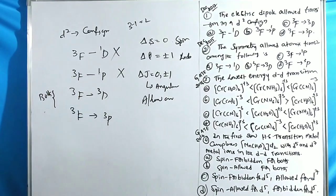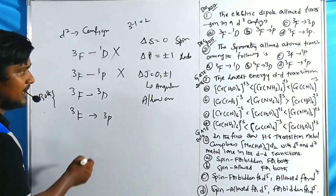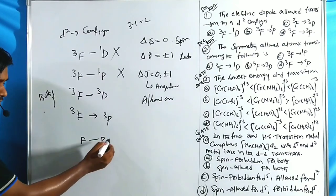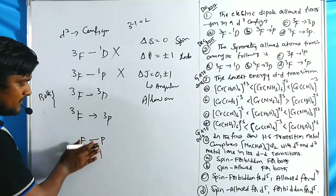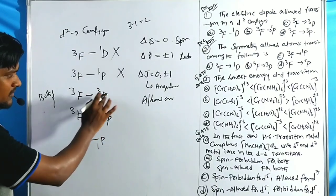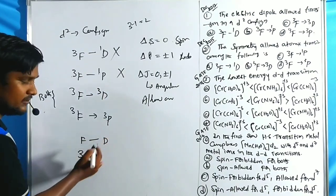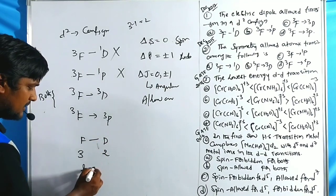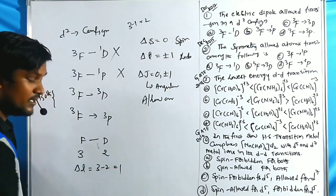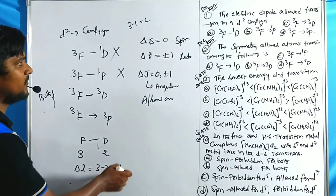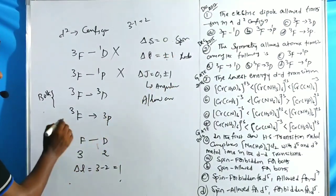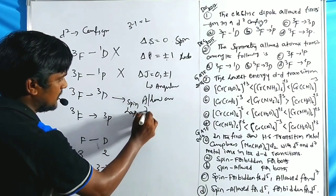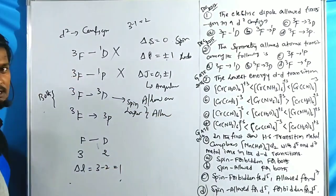For the spin-allowed options, we apply the Laporte selection rule. For the third option, ³F → ³D: L(F) = 3, L(D) = 2, so ΔL = 3 − 2 = 1. This satisfies ΔL = ±1, making it both spin allowed and Laporte allowed.